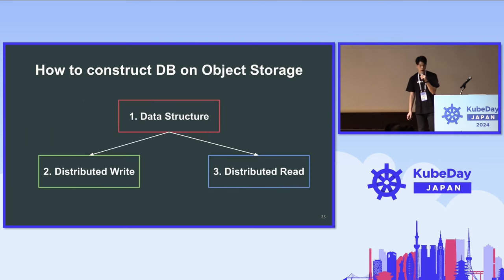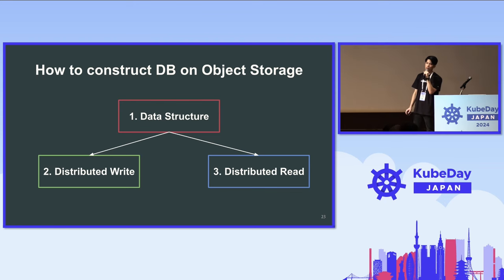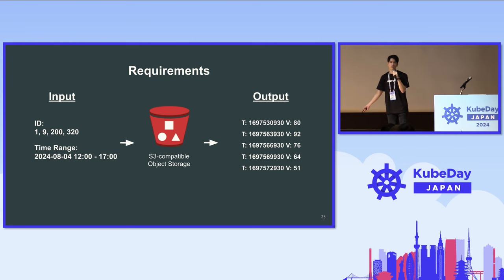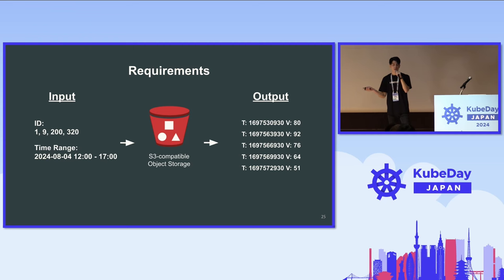How do you construct such a database on top of object storage? There are three important things: data structure, distributed writing, and distributed reading. The input is target metrics IDs and time range given in a request; the output is tuples of timestamp and metric values.